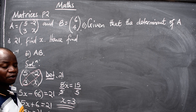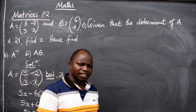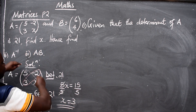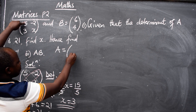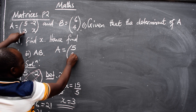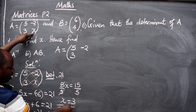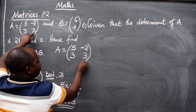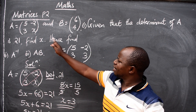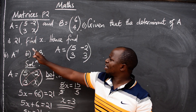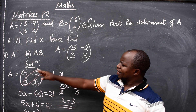So this is the value of x. Immediately you find the value of x, substitute it into the matrix. Matrix A will now be [[5, -2], [3, 3]]. This is the matrix we are going to use to find the inverse and also AB.